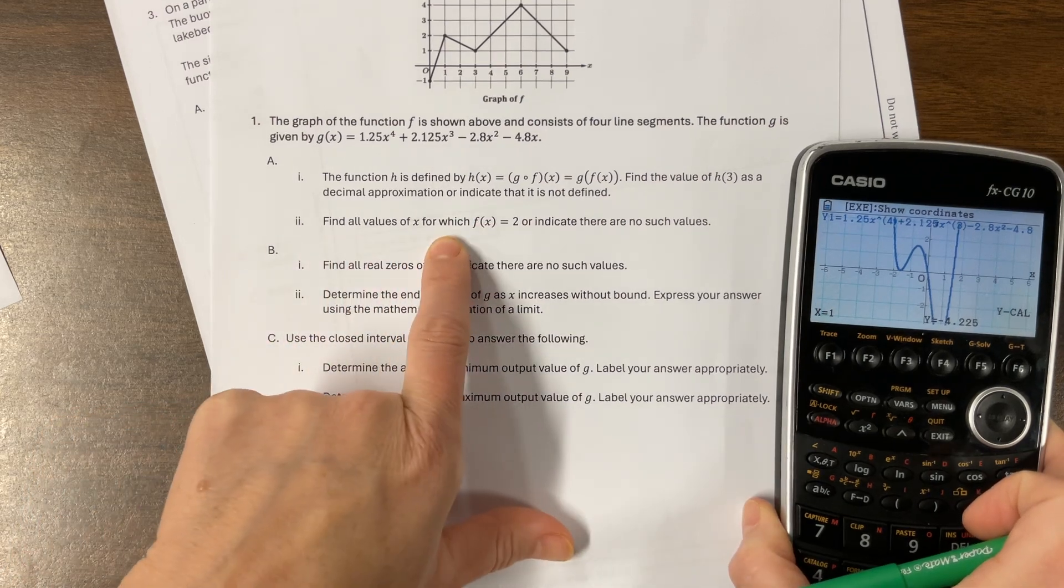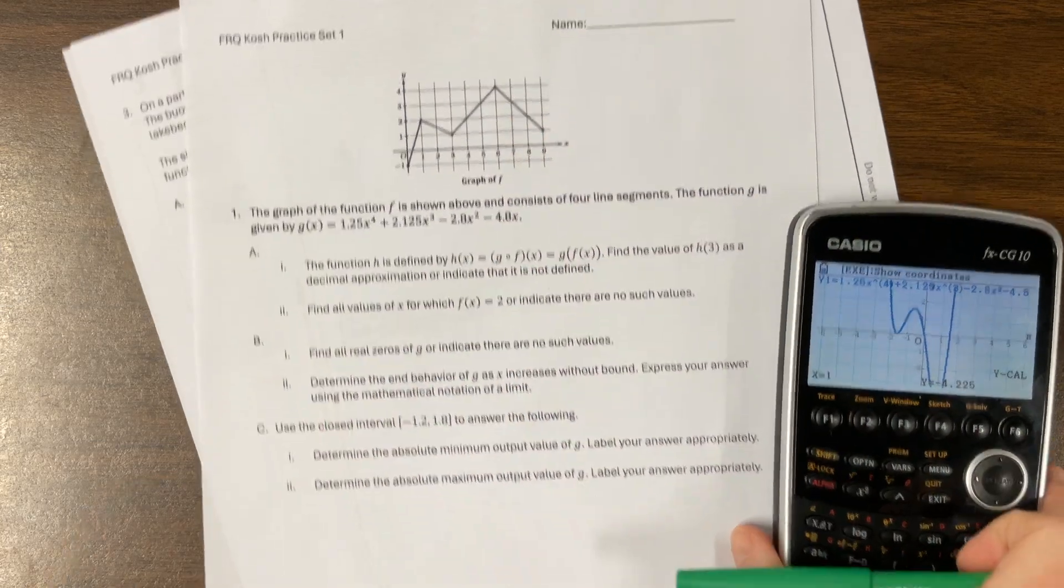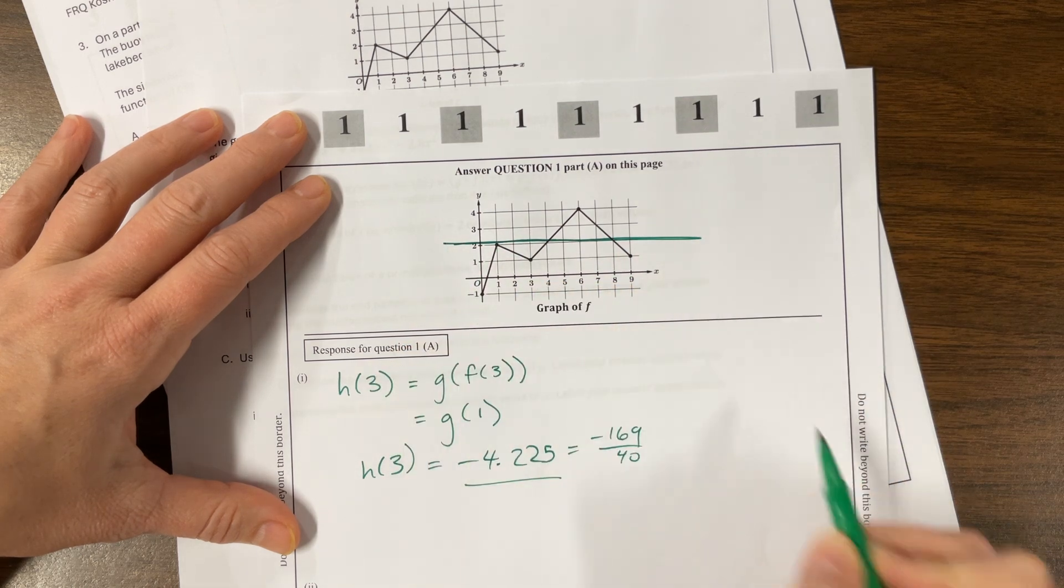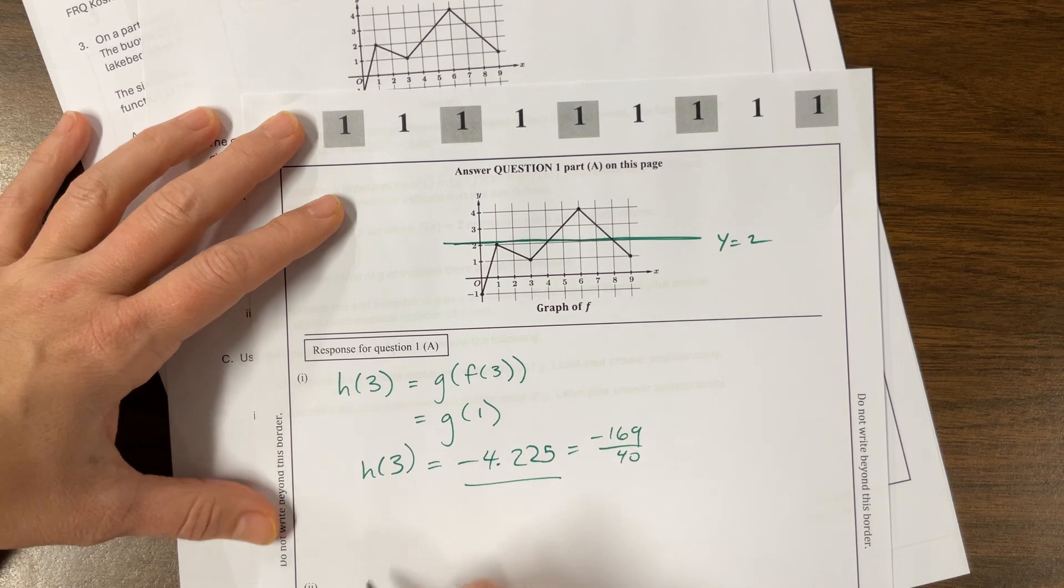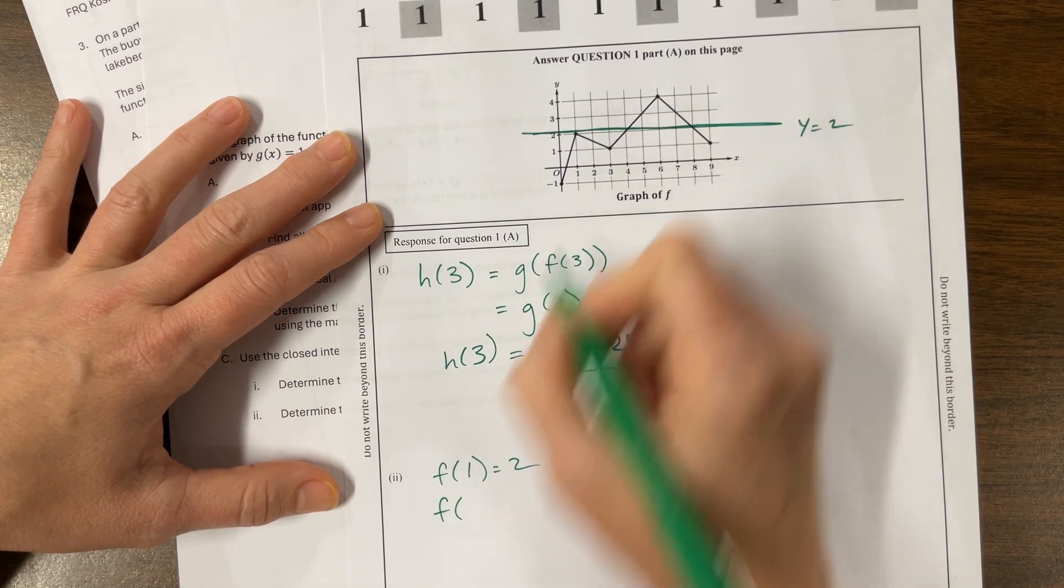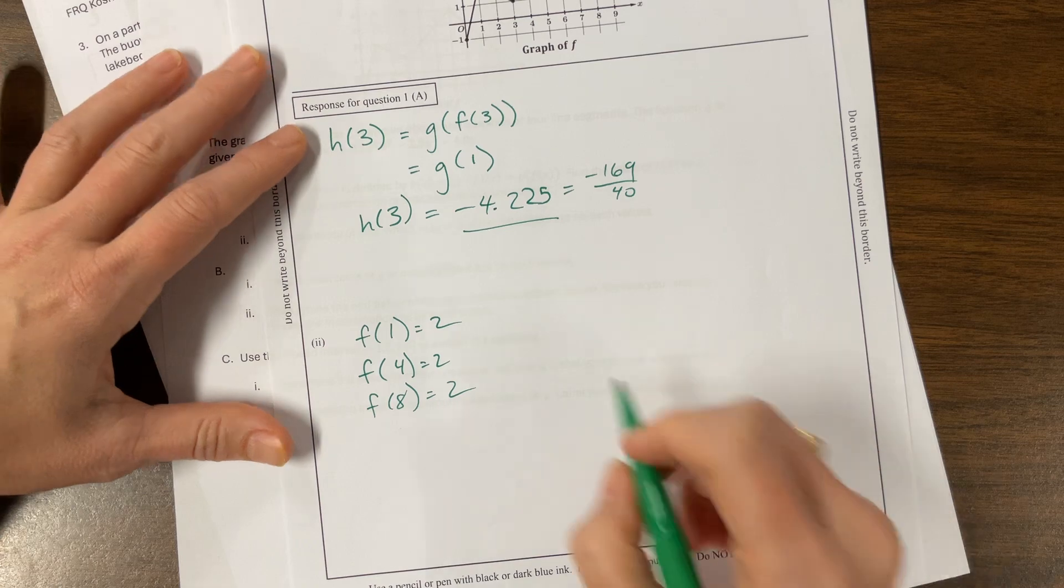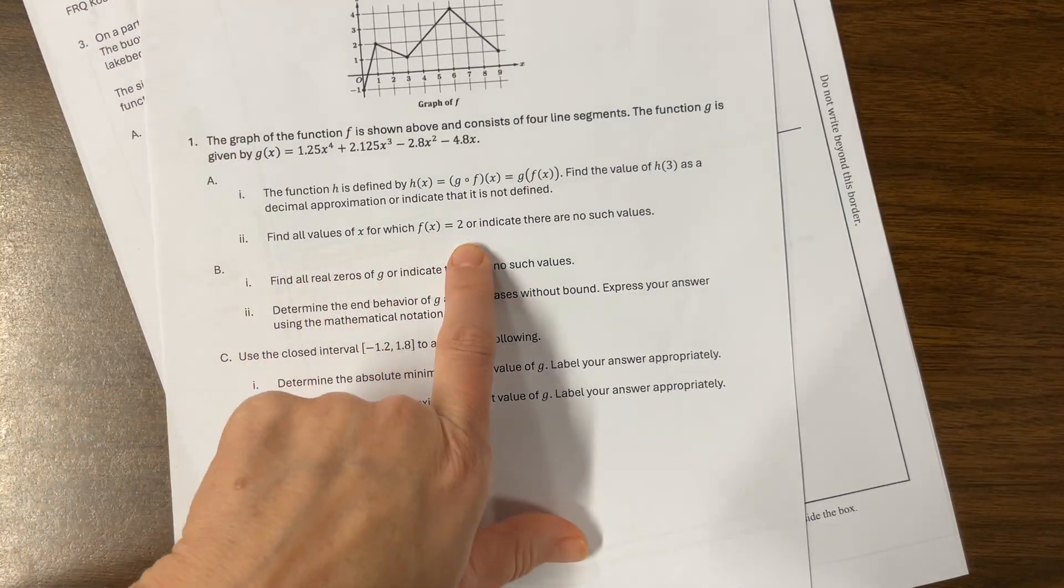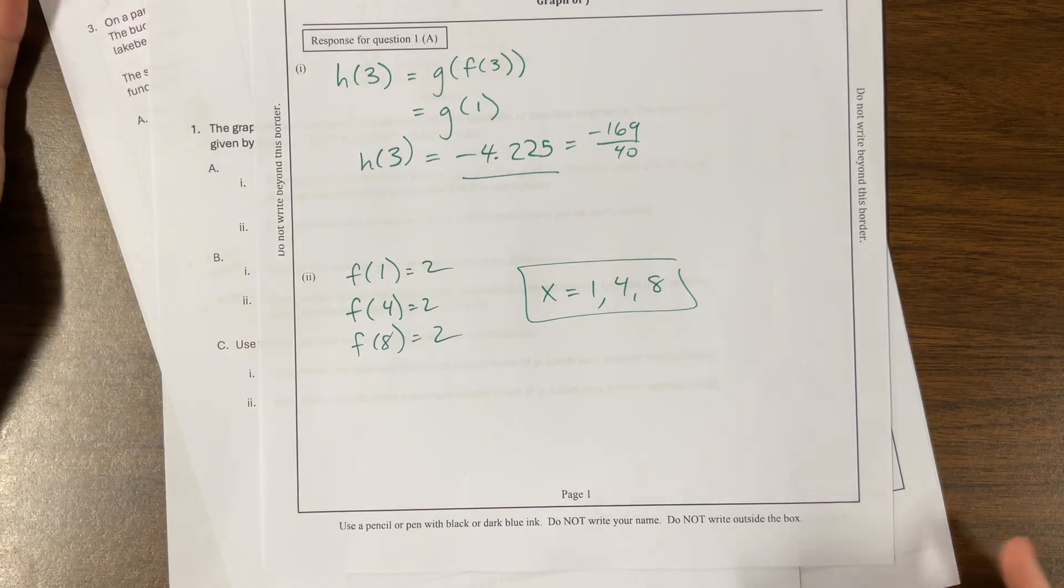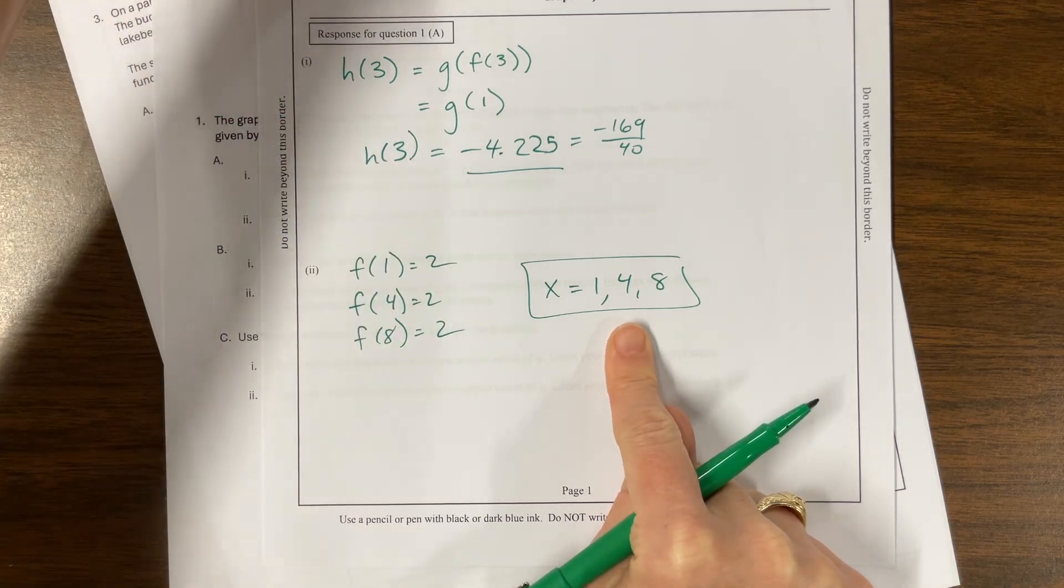Okay, find the value which we did. Okay, find all values of x for which f of x equals 2. f of x, remember, is this graph right here, or indicate that there are no such values. So we want to know, I think it's right here for us, we want to know when is this graph, when is its y value equal to 2? Okay, so this would be y equals 2, so it happened at, we could say f of 1 equals 2, we could say f of 4 equals 2, and that to me looks like 8, f of 8 equals 2. Probably the better way to say this, to answer this question, let's see, how did they ask it? Find all values for x in which that, or indicate there are no such values. We can say x would equal 1, 4, and 8.